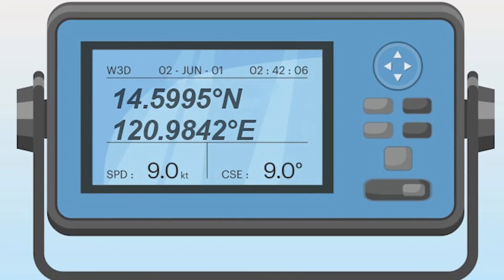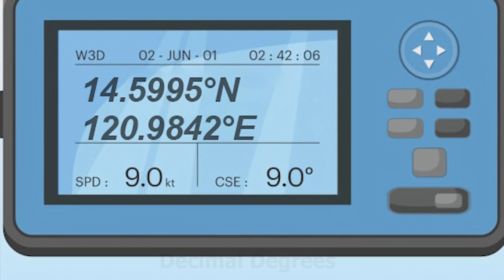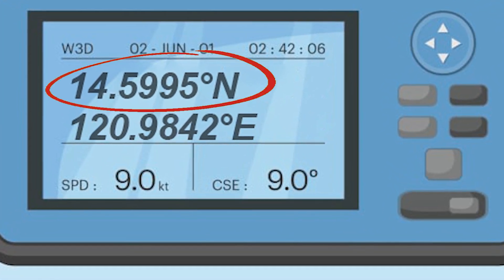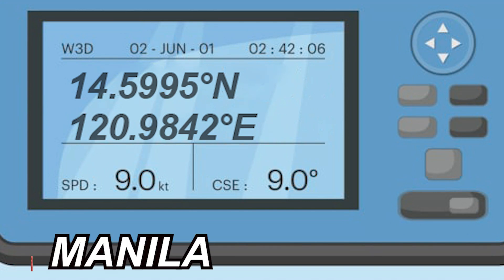Most GPS devices give coordinates in decimal degrees format. For example, 14.5995 degrees north and 120.9842 degrees east. That's Manila.